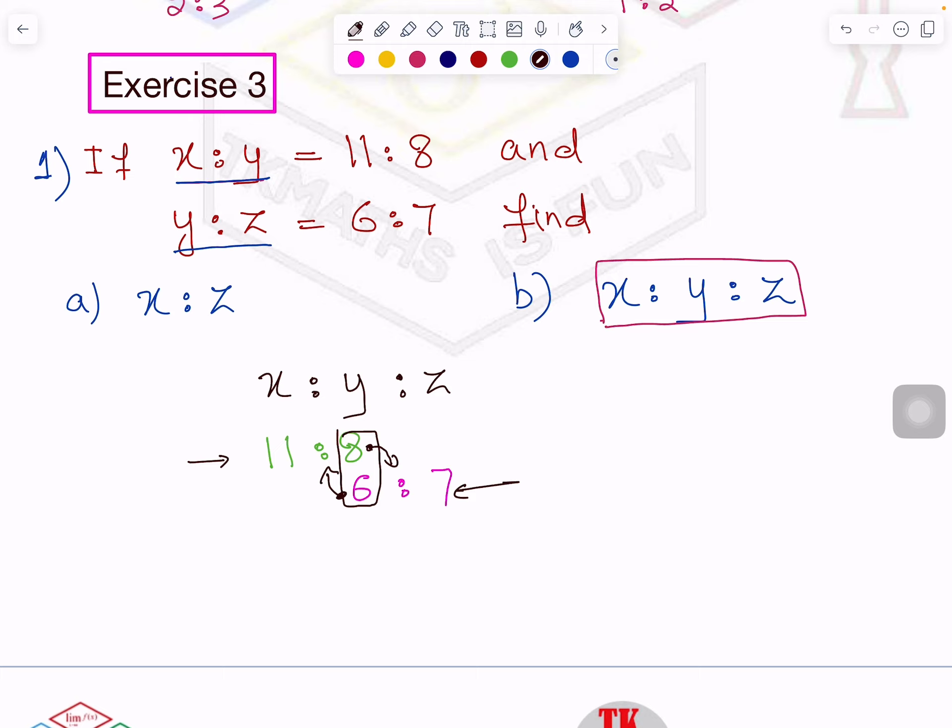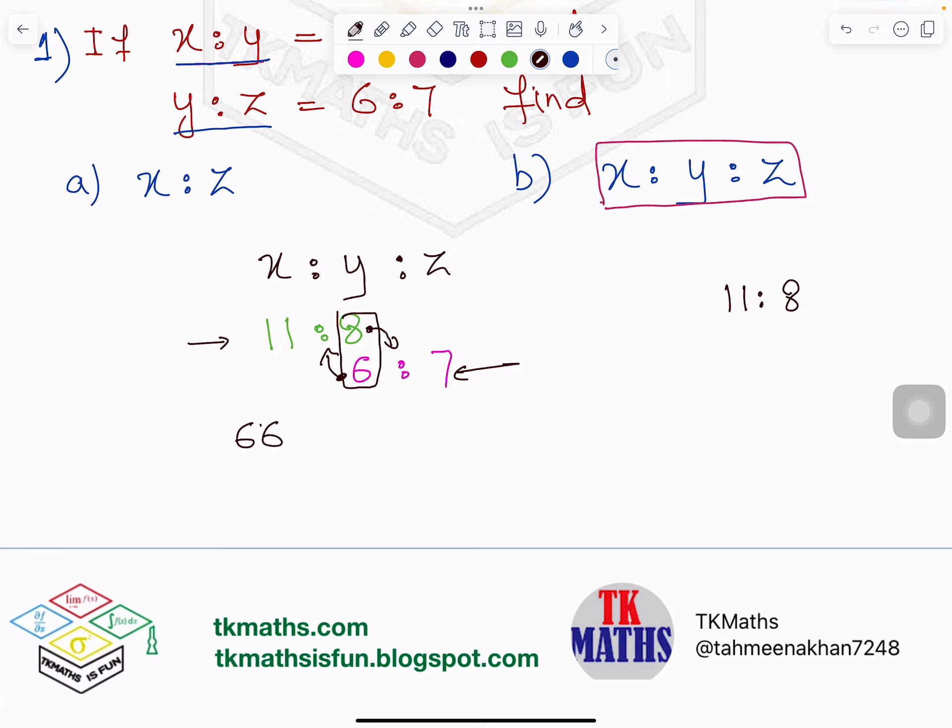So let us multiply 11 is to 8 by 6. So 6 times 11 is 66 and 6 times 8 is 48. And then this 6 is to 7 I will multiply by 8. Because I have just told you, this will multiply this group and this will multiply this group. So I will multiply them by 8. So 6 times 8 is 48 and 8 times 7 is 56.